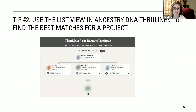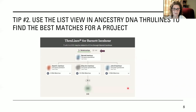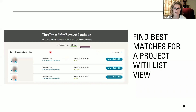Tip number two is using the list view in Through Lines at Ancestry to find the best matches. When you go to a Through Line for an ancestor, automatically you're given relationships shown as little boxes in a pedigree format. But to see your matches, you have to keep clicking the down arrows, which can get quite large on your page. A better way to find your best matches is to just go to list view — when you click on list view, it shows up in a nice neat list.